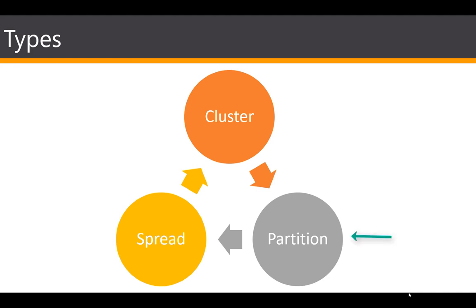Next, we have the partition placement group, which helps reduce the likelihood of correlated hardware failures for your applications. When using partition placement groups, EC2 divides each group into logical segments called partitions. EC2 ensures that each partition within the placement group has its own set of racks, and each rack has its own network and power source. No two partitions within a placement group share the same racks, allowing you to isolate the impact of any hardware failure within your application.